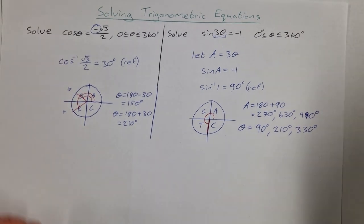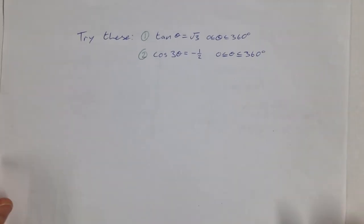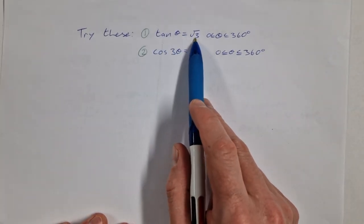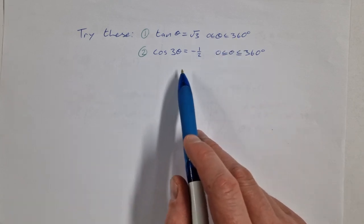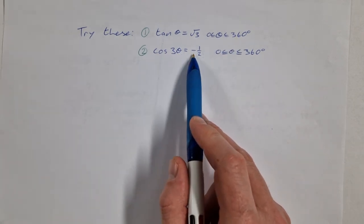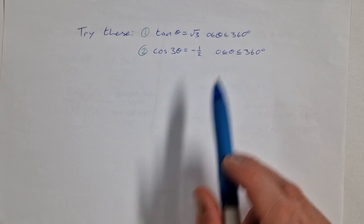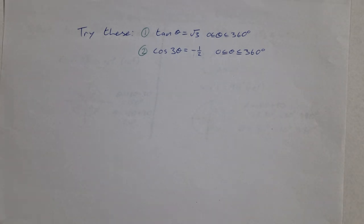OK, so I have some for you to try then. You can give these a go. Tan theta is equal to root 3, where theta is between 0 and 360, and cos of 3 theta is equal to minus 1 half, where theta is between 0 and 360 degrees. So give them a go. Write your answers in the comments, and we'll see how you get on. Thank you.